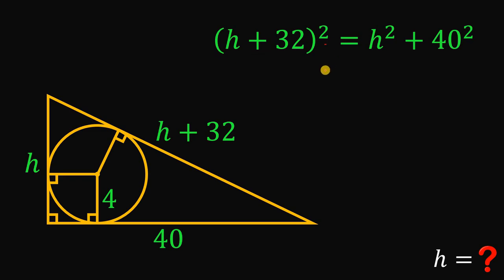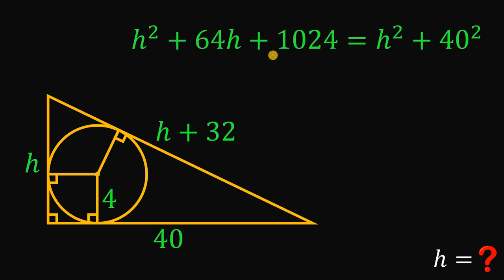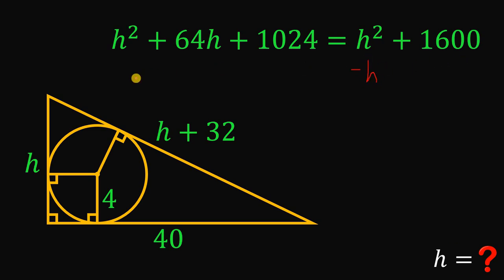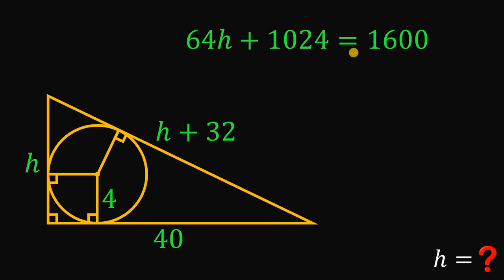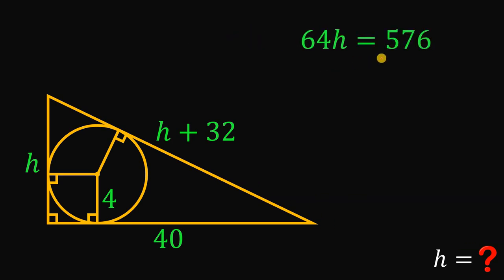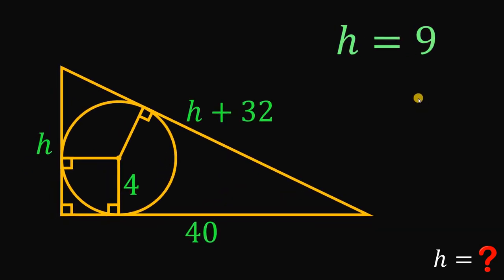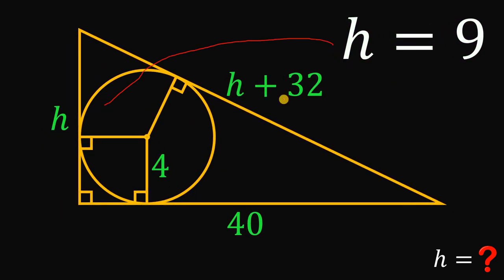So we have (h + 32)² = h² + 40². Expanding: h² + 64h + 1024 = h² + 1600. Subtracting h² from both sides, we get 64h + 1024 = 1600. Subtracting 1024 from both sides gives 64h = 576. Dividing both sides by 64, we get h = 9. That is our first solution using the Pythagorean theorem.